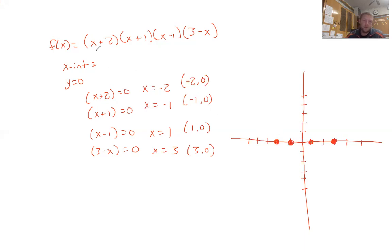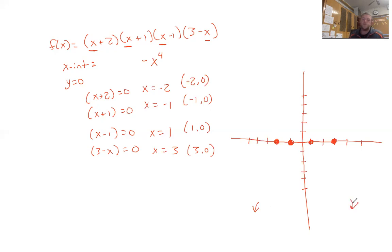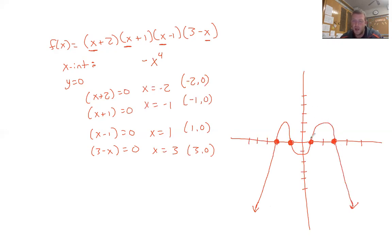Now get the leading coefficient and degree by multiplying: x times x times x times negative x gives negative x to the 4th. Since the degree is even (4), both sides of the graph go in the same direction. Since the leading coefficient is negative, both sides go down. We don't know exactly what the middle looks like, but we know the general shape — it comes from below, passes through the intercepts, and returns below.